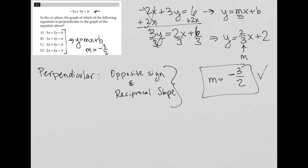So now I'm going to try choice A. And I have 3x plus 2y equals 6. I'm going to subtract 3x from both sides. That leaves me with 2y equals negative 3x plus 6.